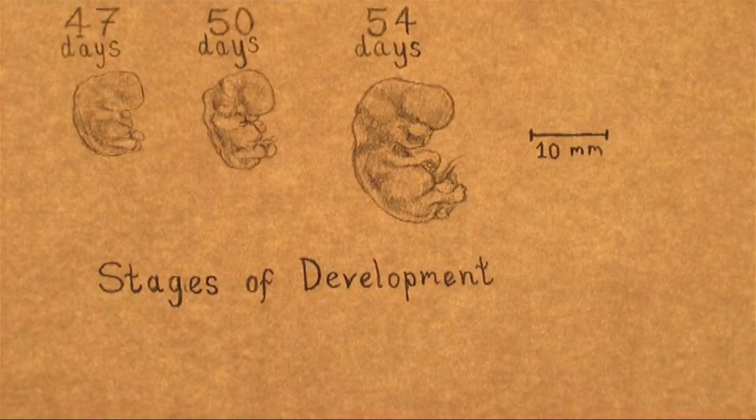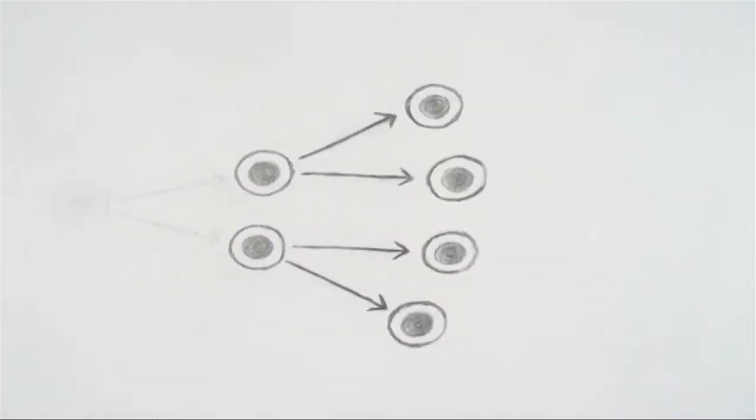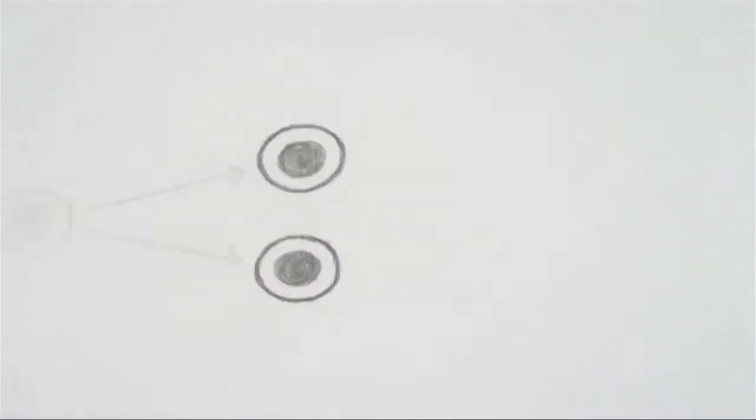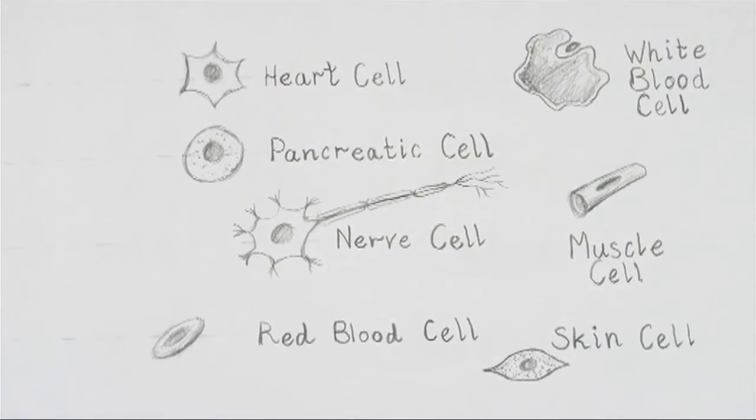Zu bestimmten Zeiten hören die meisten Zellen auf, Kopien von sich selbst zu machen, und beginnen stattdessen, sich zu spezialisieren. Wenn wir erwachsen sind, sind fast alle unserer Zellen spezialisiert.